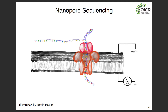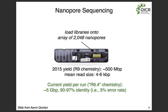Regarding costs: Nanopore flow cells, if you buy one at a time, are about $900 and give around 5 to 10 gigabases of data; buying 48 at a time brings the price to around $500 per flow cell. The Nanopore instrument itself is essentially $1,000, so you don't have to put a lot of money up front. For PacBio, the machine is hundreds of thousands of dollars, with reagent costs around $300 per run and around 5 gigabases of data.